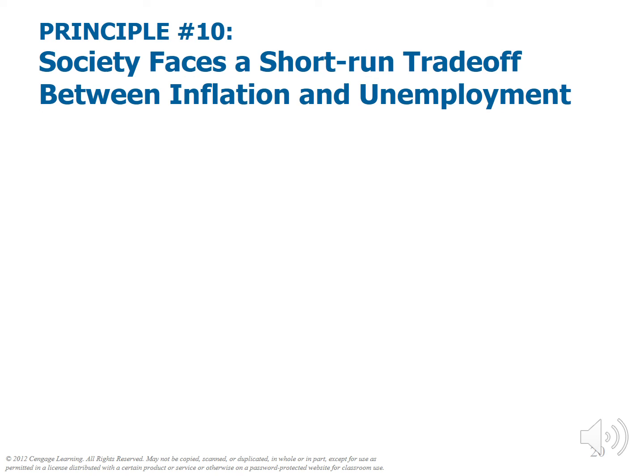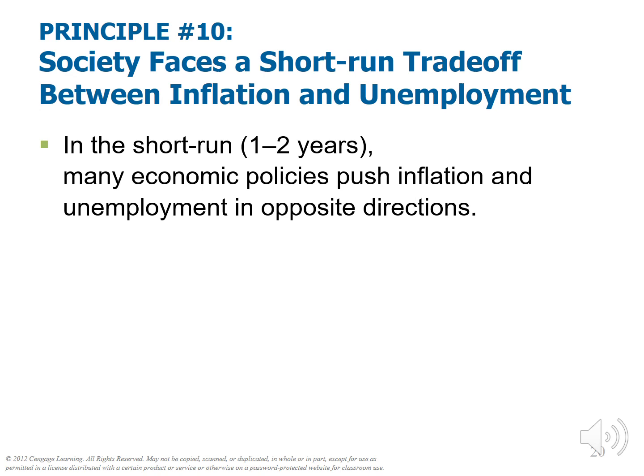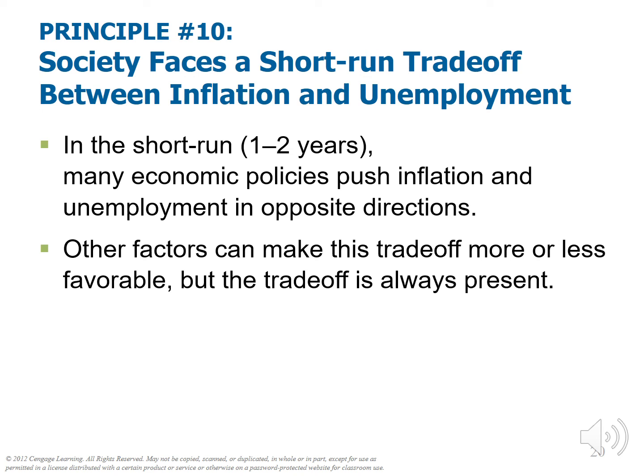Societies face a short-run trade-off between inflation and unemployment. In the short run — which we estimate to be between one and two years — many economic policies can push inflation and unemployment in opposite directions. Economic stimulus, either fiscal or monetary, can generate some inflationary trends but come with the benefit of improving employment. This is an effect that occurs only in the short run. Other factors can make this trade-off more or less favorable, but the trade-off is always present.